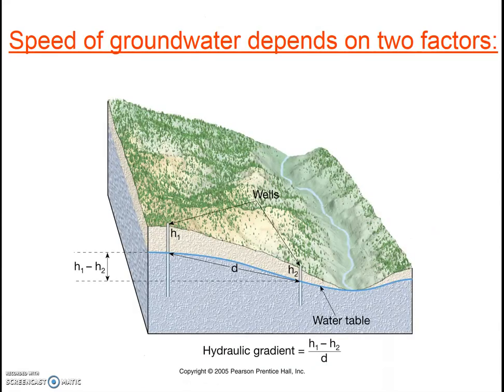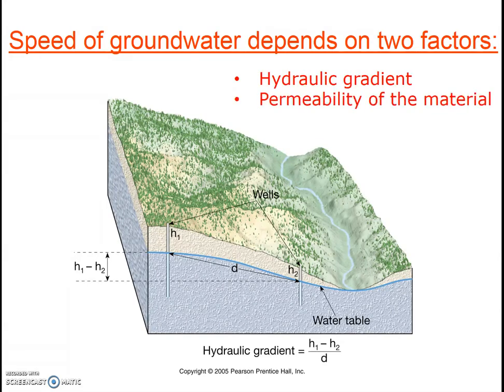The speed of groundwater depends on two factors: the slope of the water table, also called the hydraulic gradient, and the permeability of the material it's trying to flow through, sometimes called the hydraulic conductivity. The steeper the hydraulic gradient, the faster the flow. The slope is simply rise over run, just like in your math class. You can measure it by determining the elevation of the water table in two adjacent wells and then measuring the distance between them.